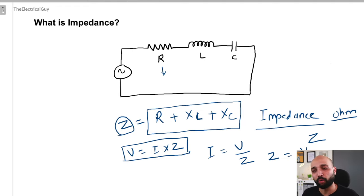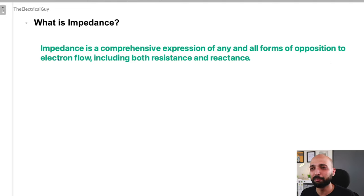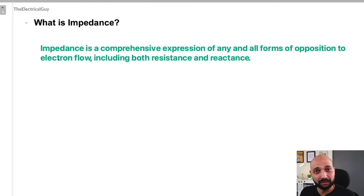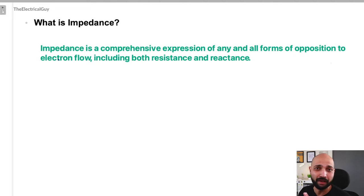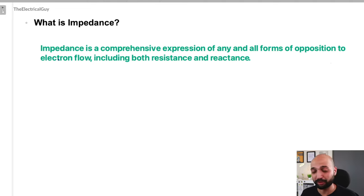The proper definition of impedance is: impedance is a comprehensive expression of any and all forms of opposition to electron flow, including both resistance and reactance. This is important — even your resistance alone can be called impedance in an AC circuit. The term impedance is not applicable in the case of DC. So even if your AC circuit has only resistance or only reactance, you can refer to its opposition as impedance.